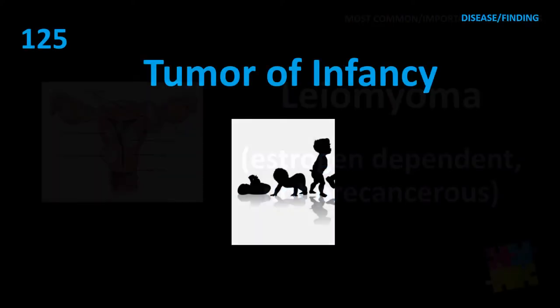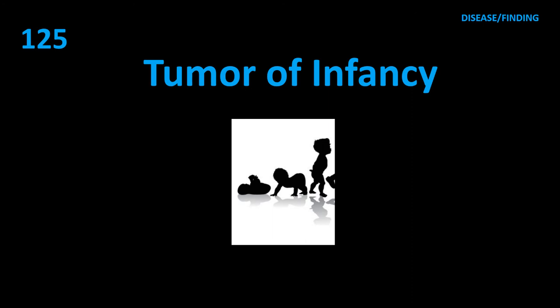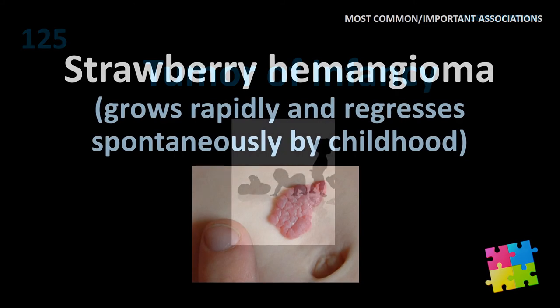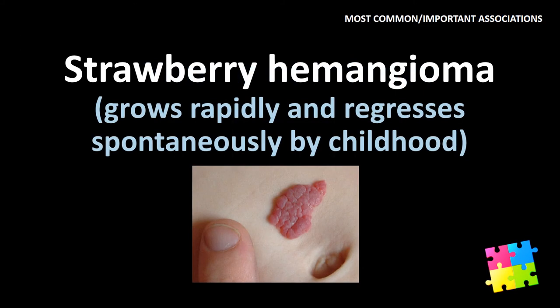Item 125: Tumor of infancy. Item 126: Strawberry hemangioma — grows rapidly and regresses spontaneously by childhood.